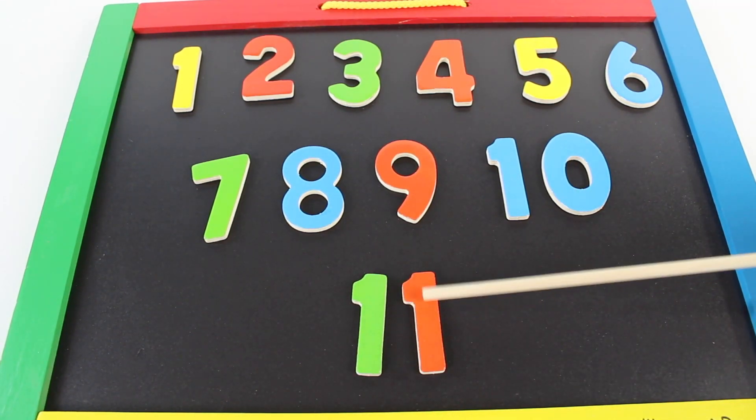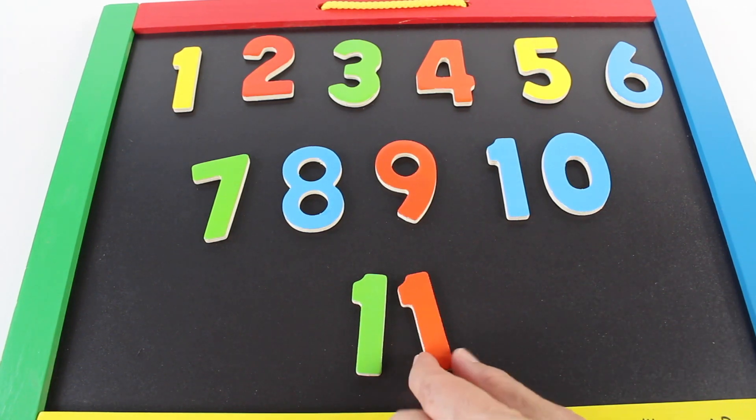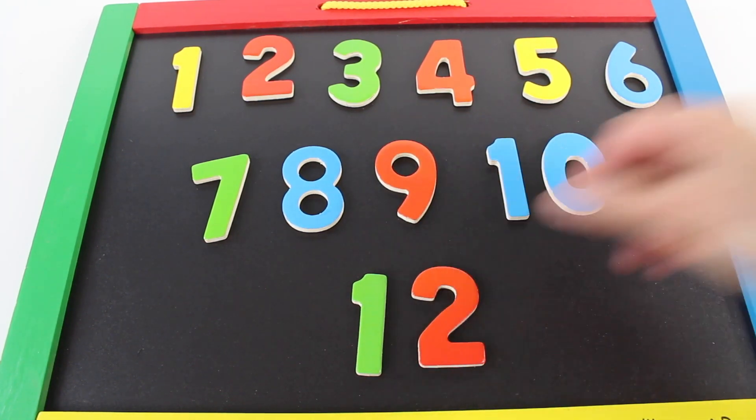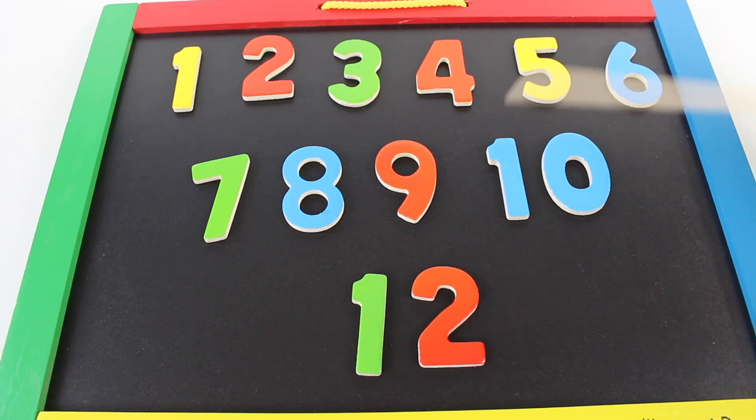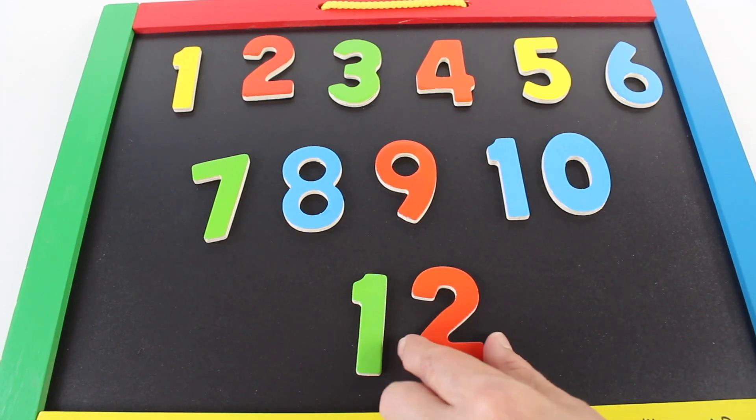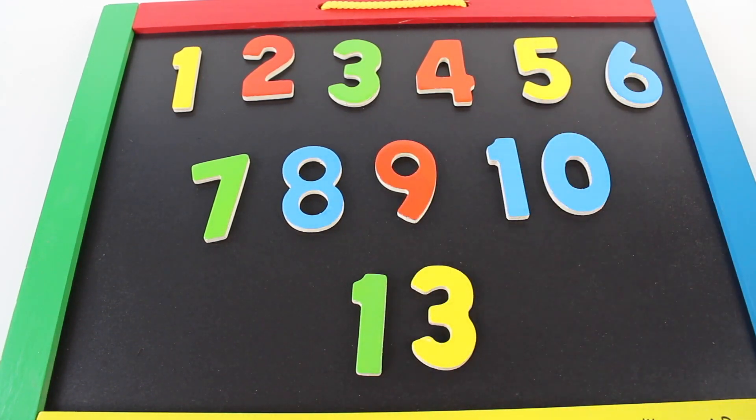One and one make eleven. One and two make twelve. One and three make thirteen.